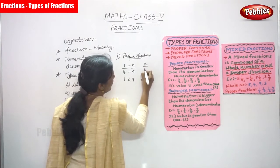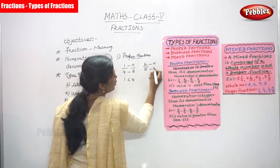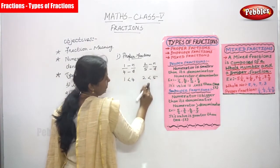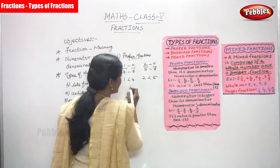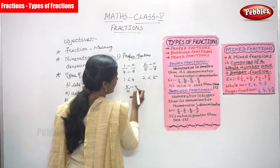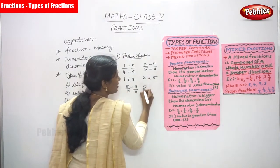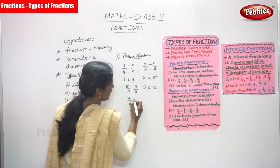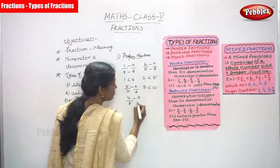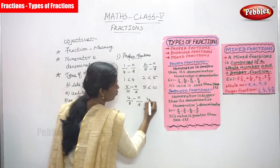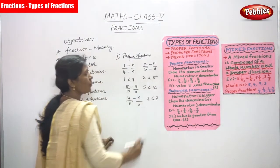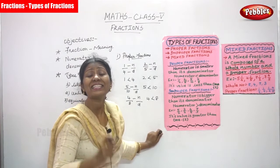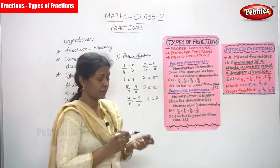Next example: 2 by 5 — 2 is less than 5, so it is a proper fraction. Then 5 by 10 — 5 is the numerator and 10 is the denominator; 5 is less than 10, so it is a proper fraction. And 4 by 8 — 4 is the numerator and 8 is the denominator; 4 is less than 8, so it is a proper fraction. The value of a proper fraction is always less than 1.